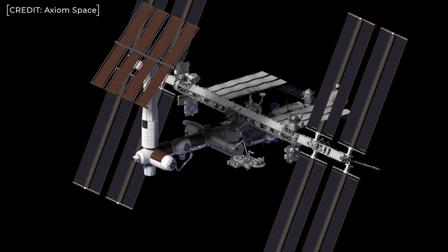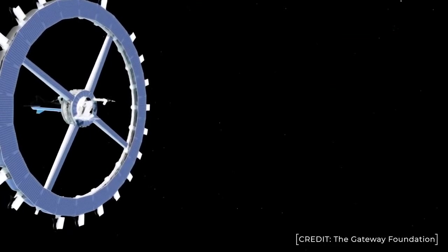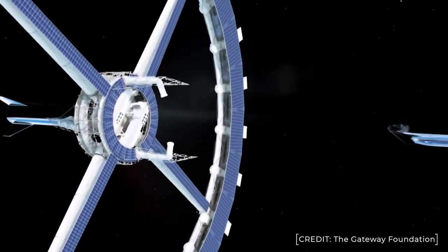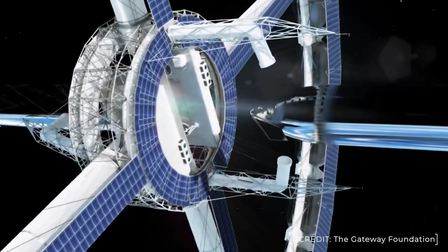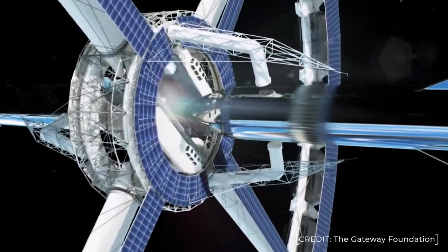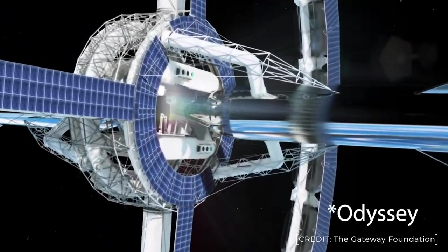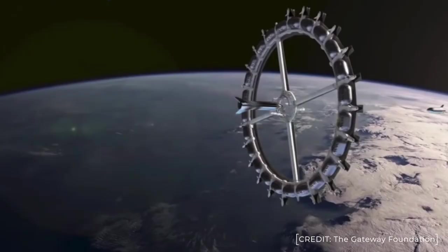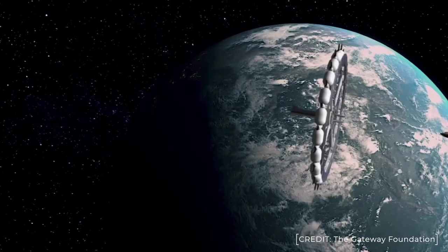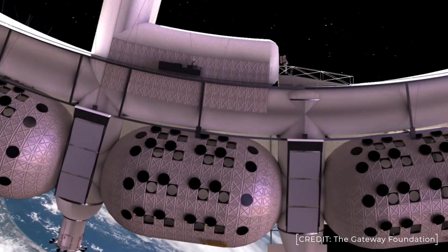Now the prize for just sheer ambition has to go to the Orbital Assembly Corporation and the recently announced Voyager Station. This aims to open sometime around 2026, which I think is a little ambitious, but anyway. As you can see, it is very reminiscent of the station in 2001: A Space Odyssey. We have this rotating toroidal design which should provide, they say, a simulated one-sixth Earth gravity, so that's pretty similar to the Moon. It will have room for up to 280 guests and 112 crew members.